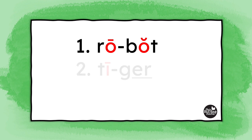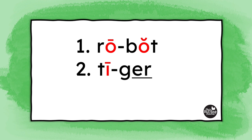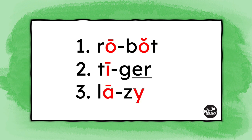In the closed syllable video, we talked about introducing the ER chunk on the end of words. You can use the ER chunk with open syllables too, like in the word tiger. You can also teach words that have two open syllables, like in the word lazy. In this word, the Y makes its open long E sound.